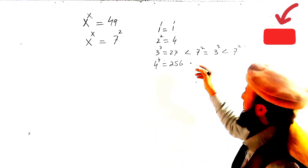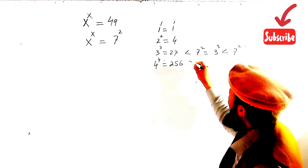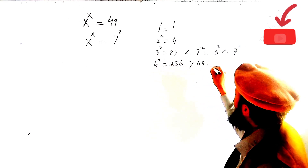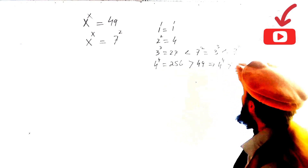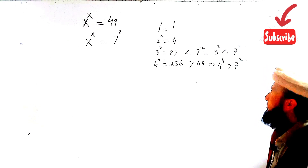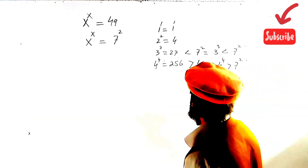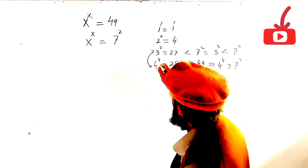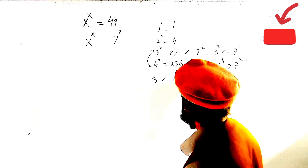Similarly, 49 is greater than 3^3 but less than 4^4. Following this range, it means the answer must lie between these two numbers: 3 less than x less than or equal to 4.